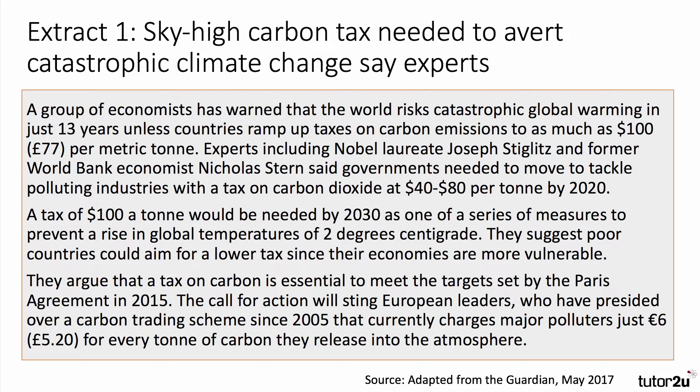If you're watching on YouTube, it might be a good idea to press pause as we go through each of the extracts. Extract one is from The Guardian, summer 2017, in which eminent economists including Nobel Laureate Joseph Stiglitz argued that governments needed to move quickly to increase the price of carbon to meet climate change targets — specifically a tax of $100 per tonne by 2030. Currently the EU emissions trading scheme price has been a little below 10 euros per tonne, which is quite a low figure.